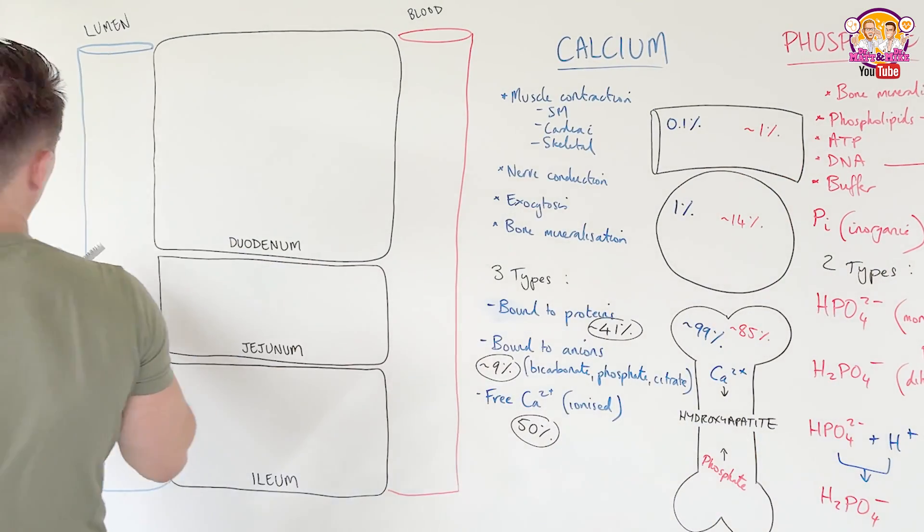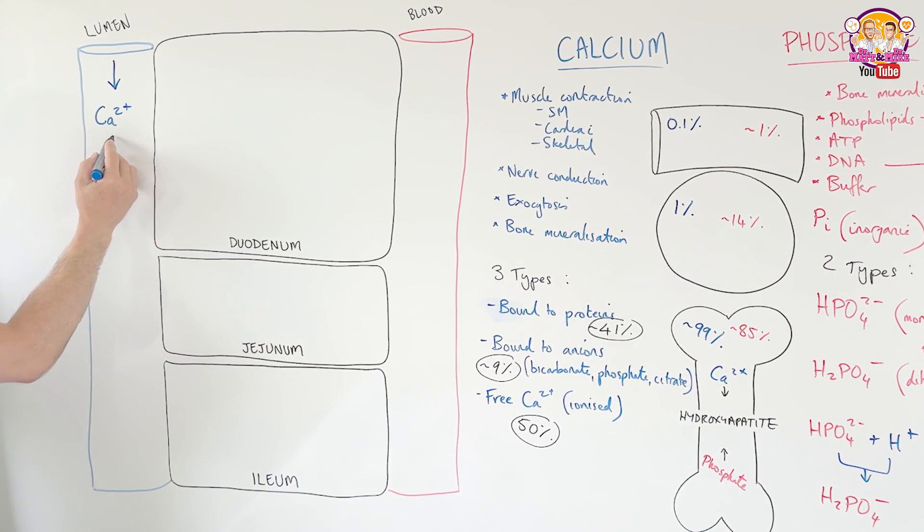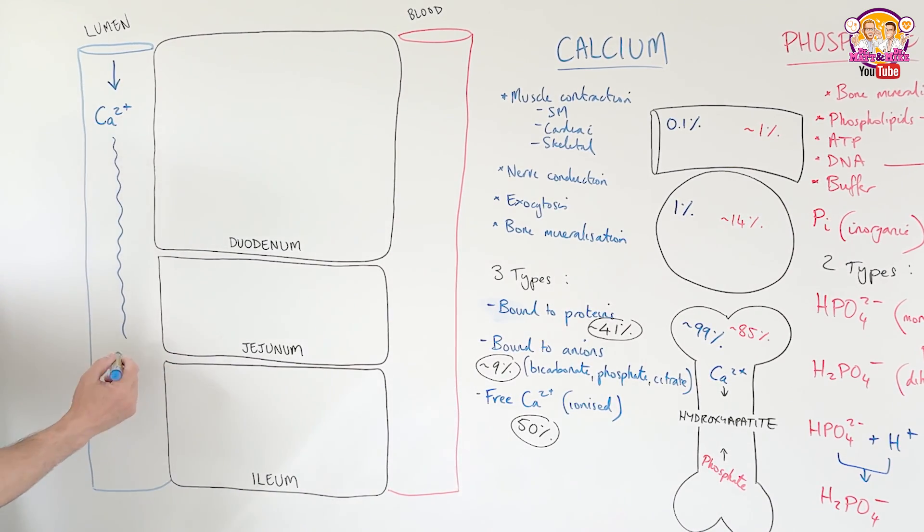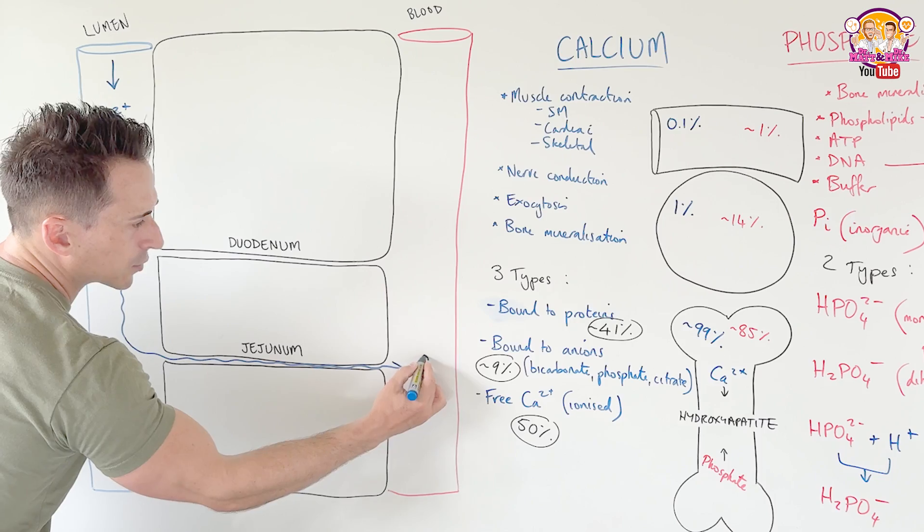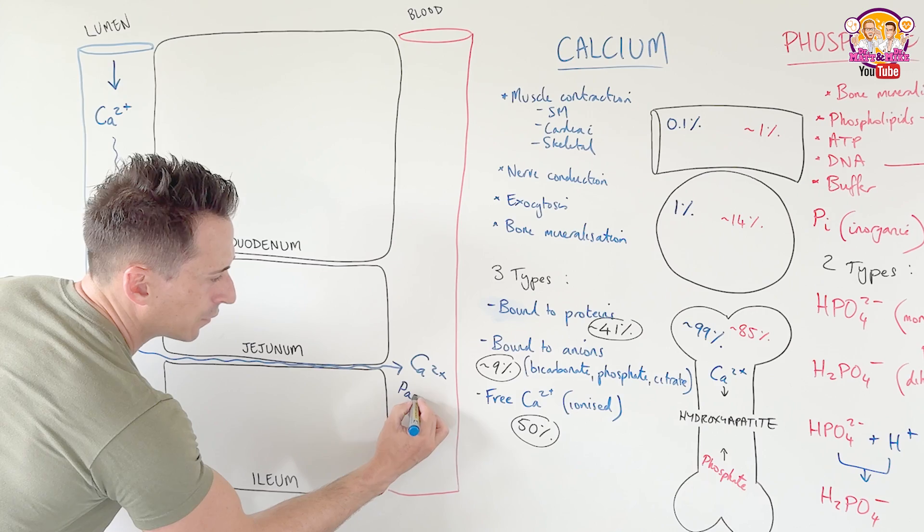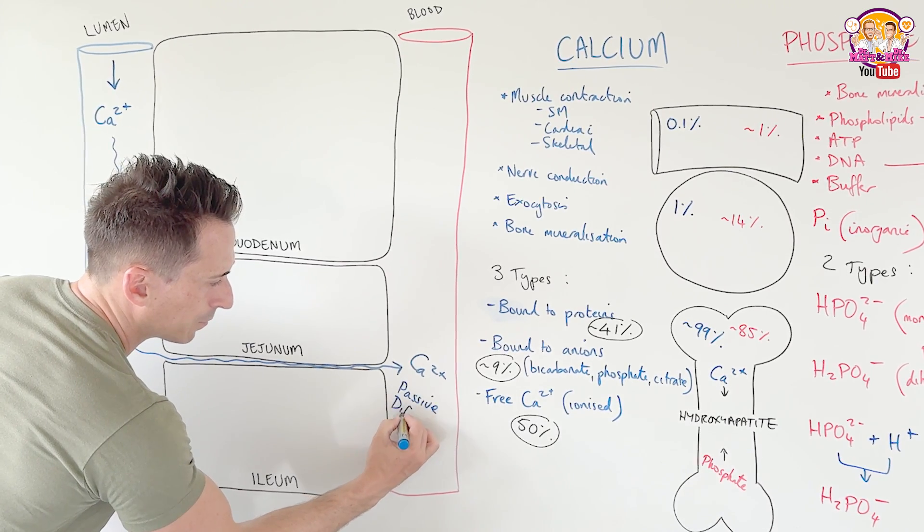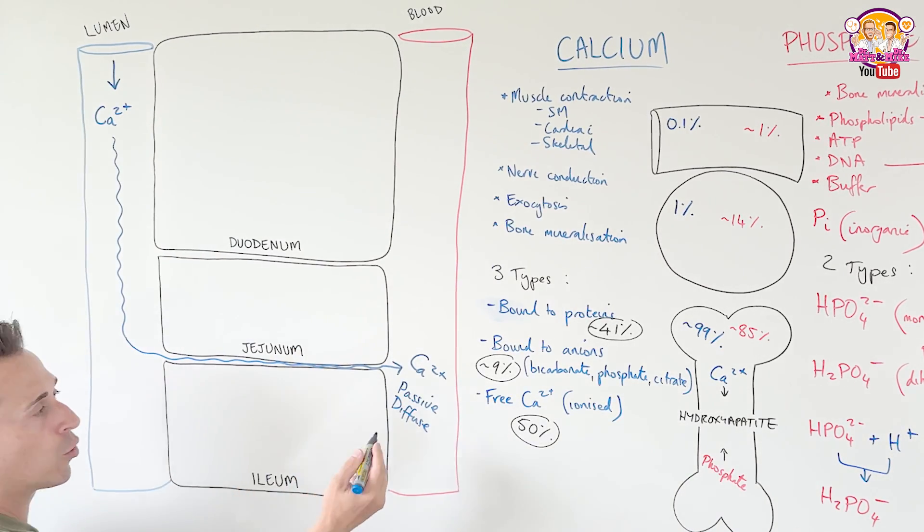So we need to talk about absorption. So when we ingest calcium, a couple of things. First thing is that that calcium, as it travels through the lumen, most of it gets absorbed, not at the duodenum, but at the jejunum and ileum. And the way it gets absorbed is it squeezes its way between the cells. How simple is that? This is called passive diffusion, and it's through a paracellular route, meaning next to or between the cells.